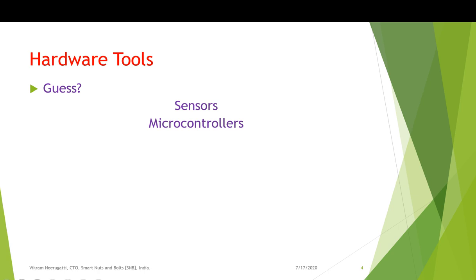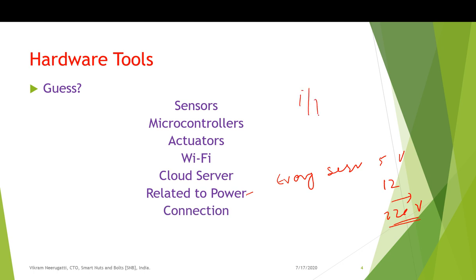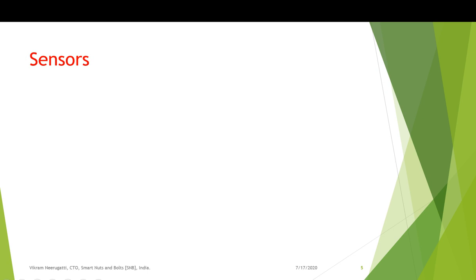For hardware tools we require: sensors to take input, microcontrollers to process data, actuators to trigger based on sensor values, Wi-Fi to connect things to the internet, and cloud to store data. We also deal with power issues — each sensor may require 5 volts, 12 volts, or more. We handle connection issues: input to process and process to output, including connecting Wi-Fi to the cloud. Finally we assemble all components on a PCB to make a prototype.